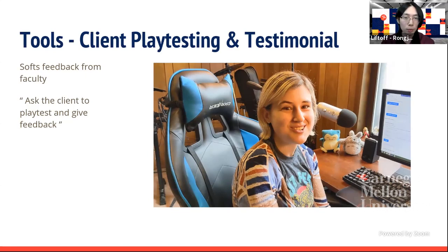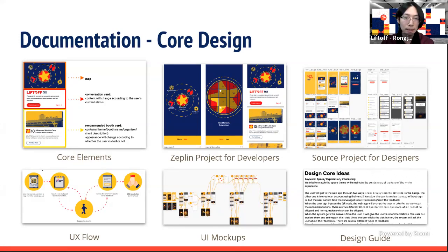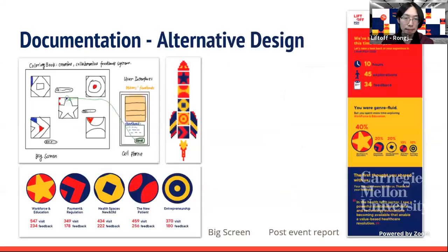Very detailed documentation was developed for anyone potentially related to the project. In the design aspect, documentation addresses all design elements including core elements, UX flow, UI mockups, and design guide. Alternative designs include a post-event report and a big screen in the exploration area showing data representation — options the next team can choose to implement. Two ideas for the big screen design are both explained in detail in the design documentation.